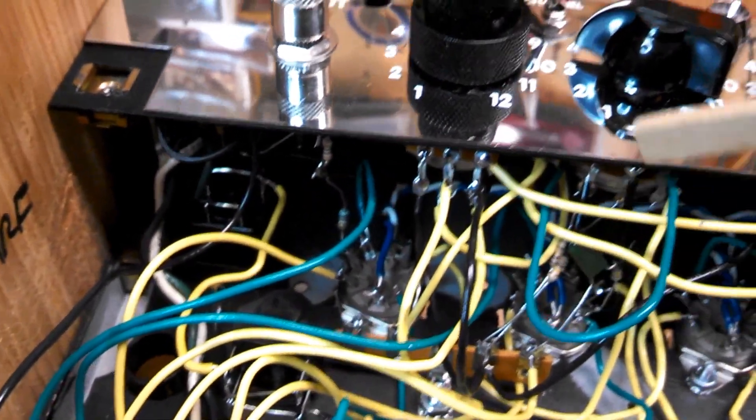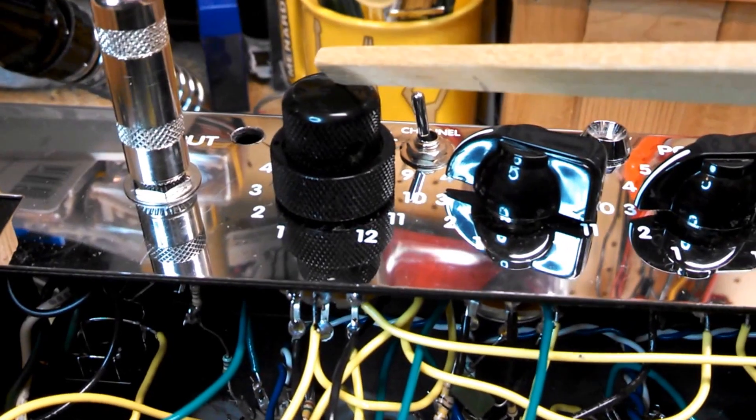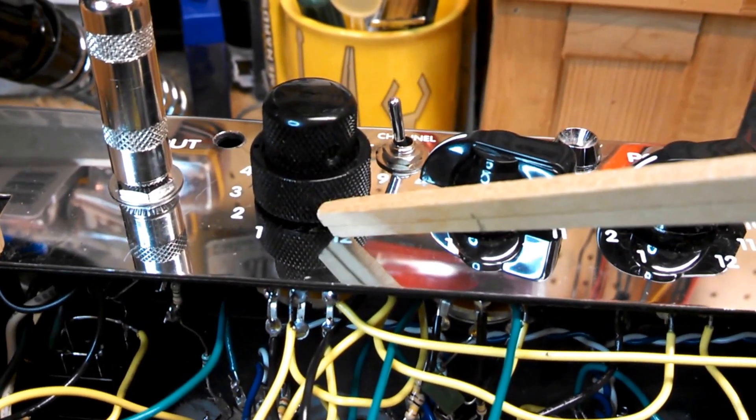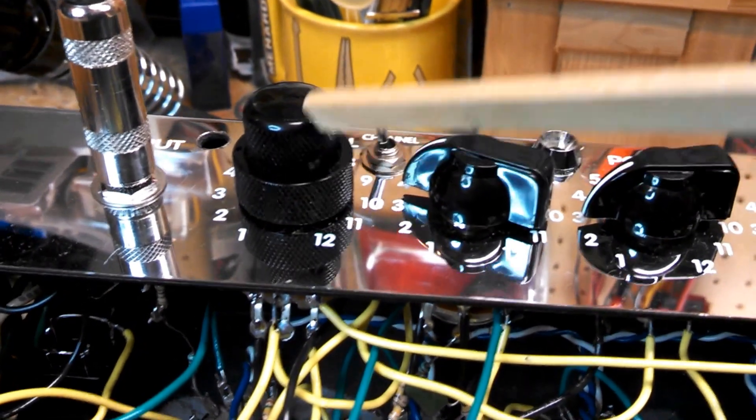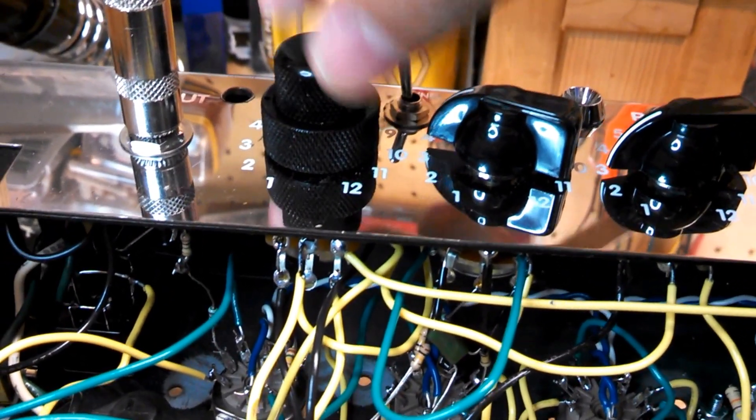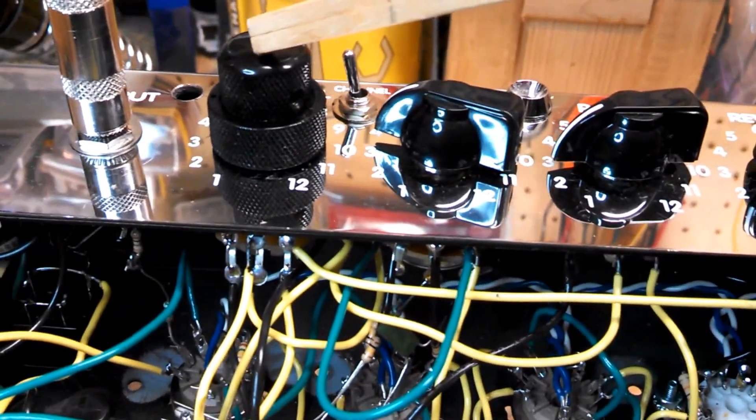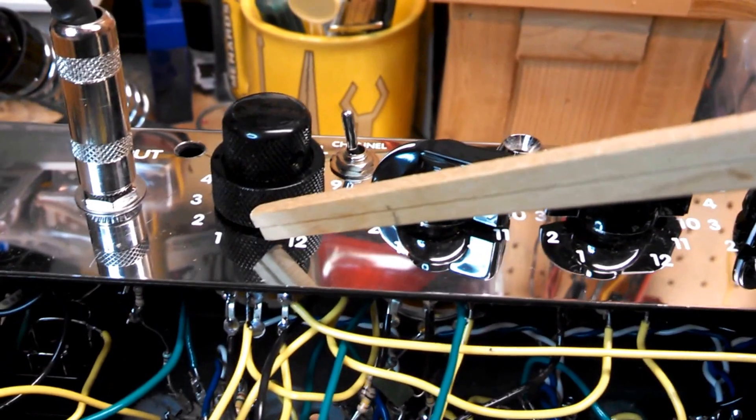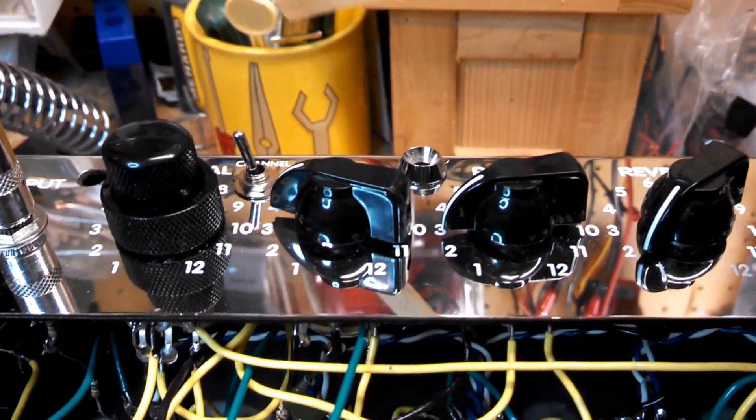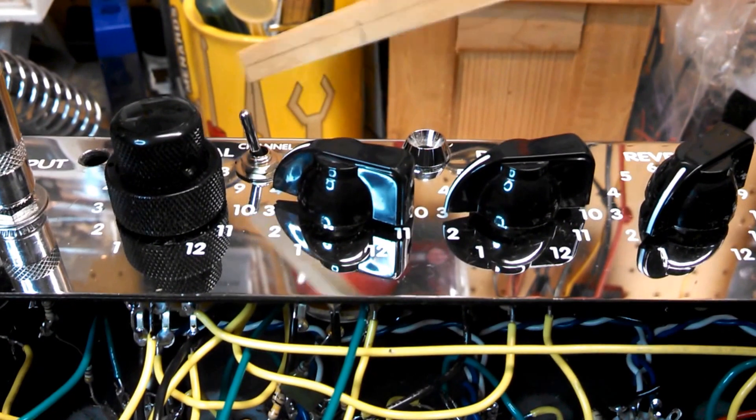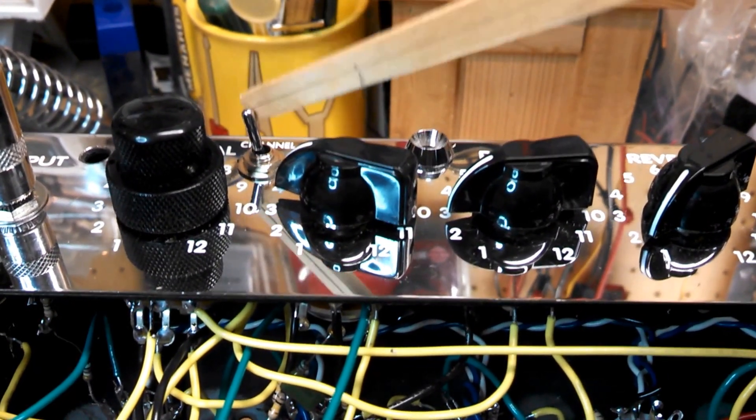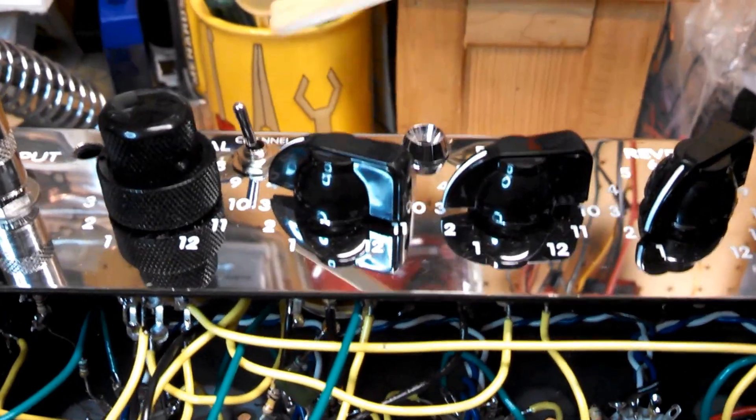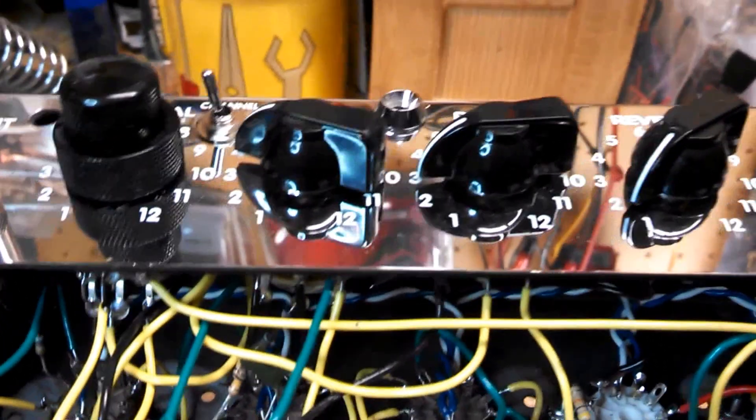The other significant change I got here is a concentric pot for the normal volume and then a master volume, and that works out pretty well. They're independent. This is 250k, which is what the original volume was. This is 500k for the master, which is still suitable. I've just got a regular double pole double throw switch in here right now.